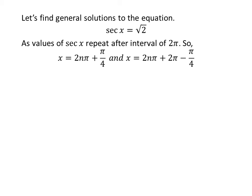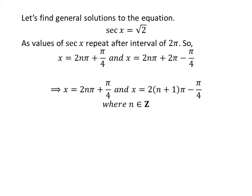Let us find the general solutions for the equation secant of x is equal to square root of 2. Since the values of secant of x repeat after the interval of 2π, the general solutions are 2nπ plus π/4 and 2nπ plus 2π minus π/4, where n is an integer. Further simplification gives the general solutions as 2nπ plus π/4 and (2n+1)π minus π/4.